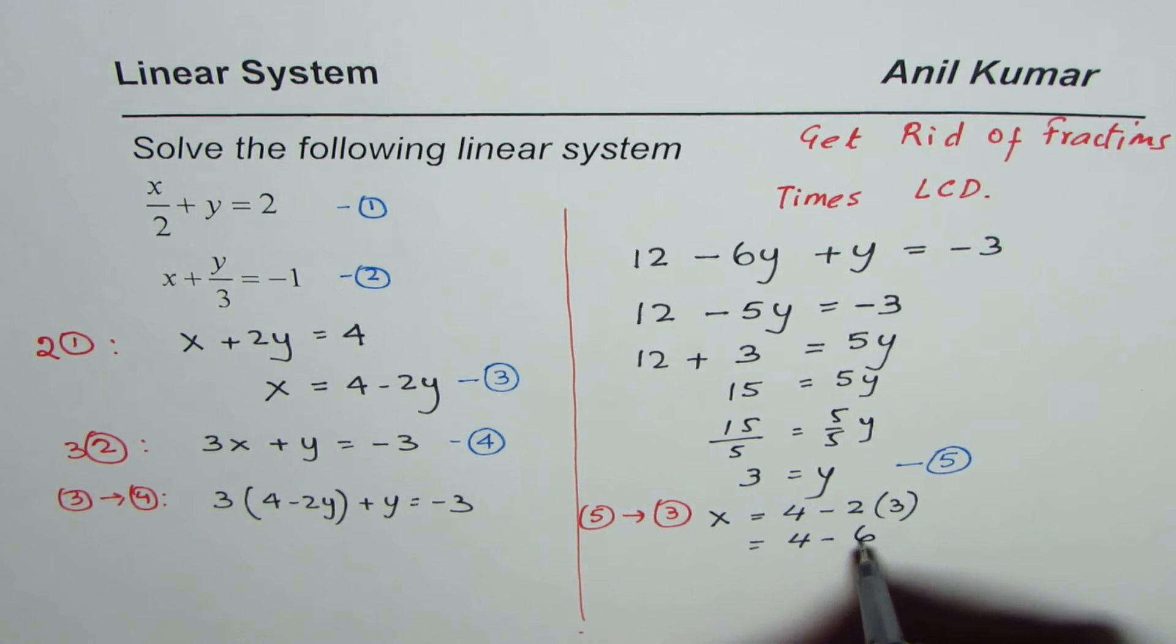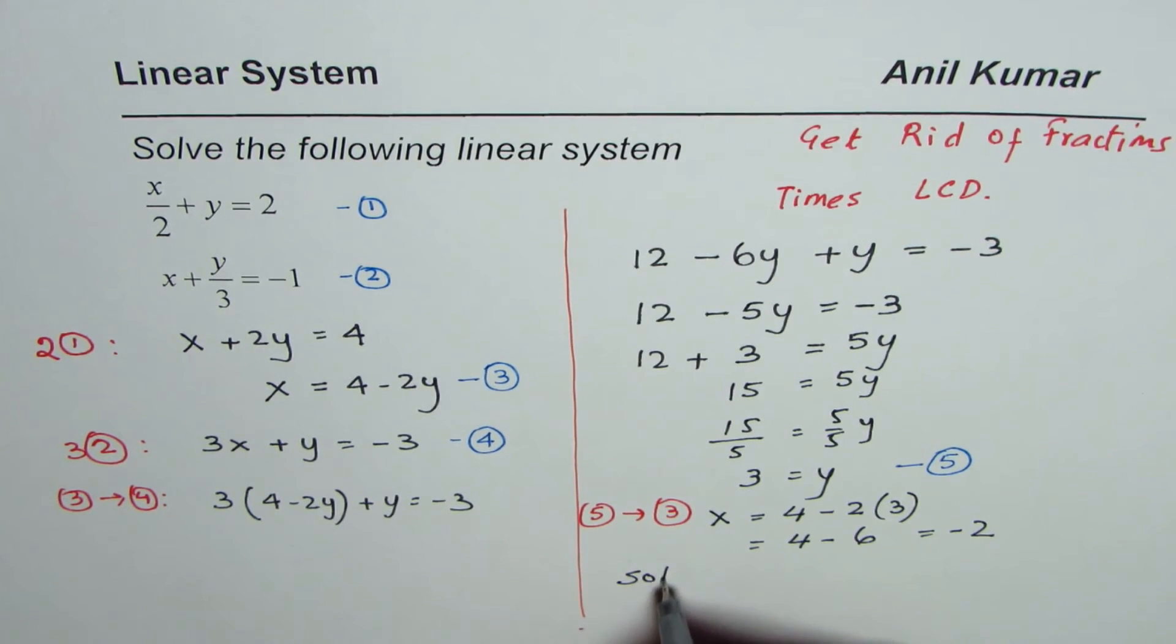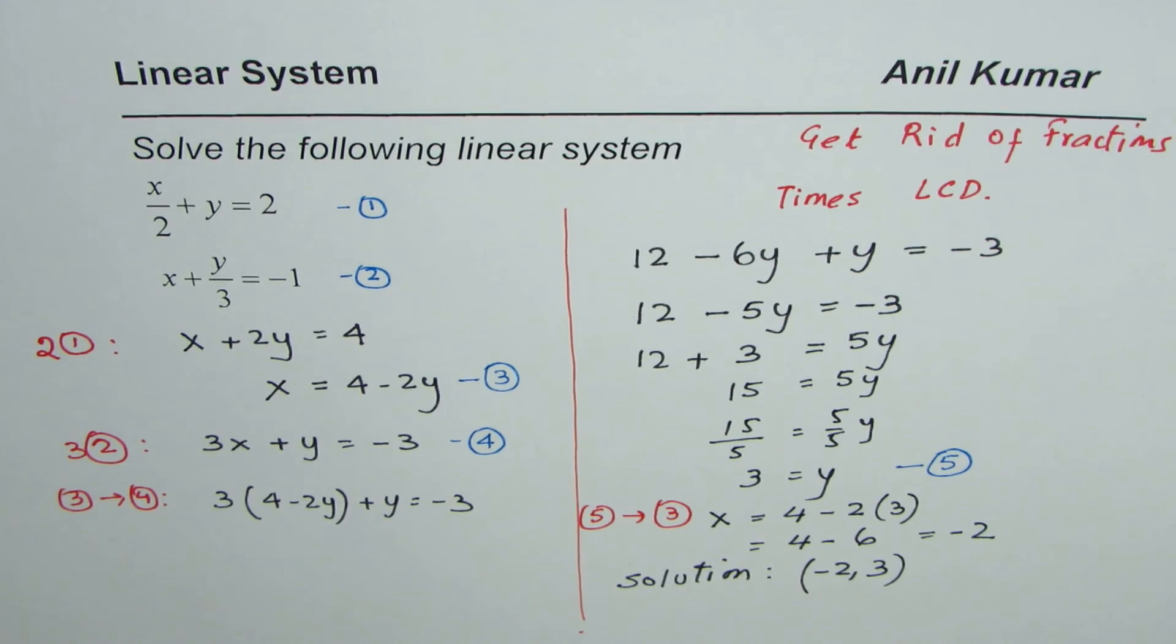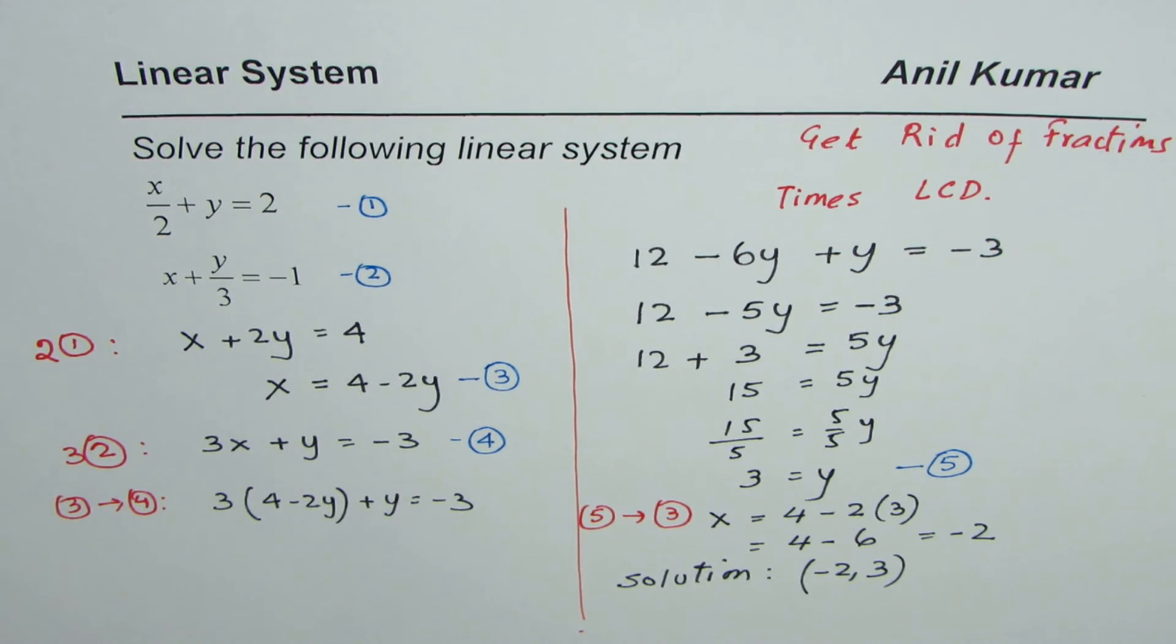So that gives us the solution. The solution for the linear system is minus 2, 3. So these are the steps involved when you are solving linear systems with fractions.